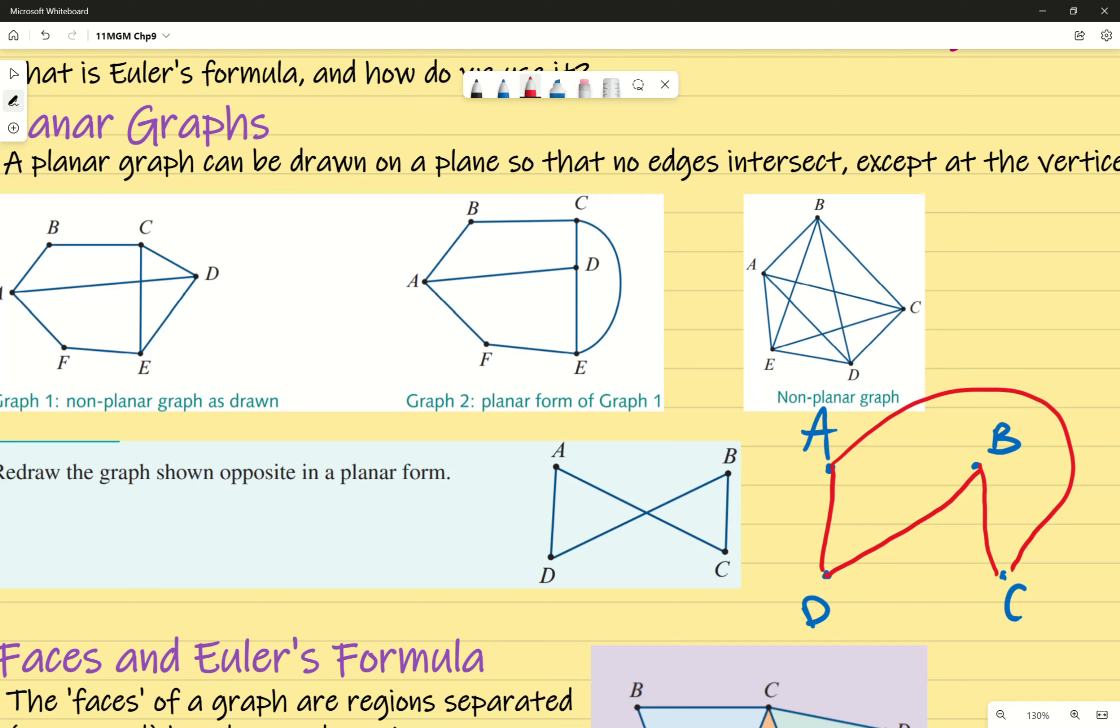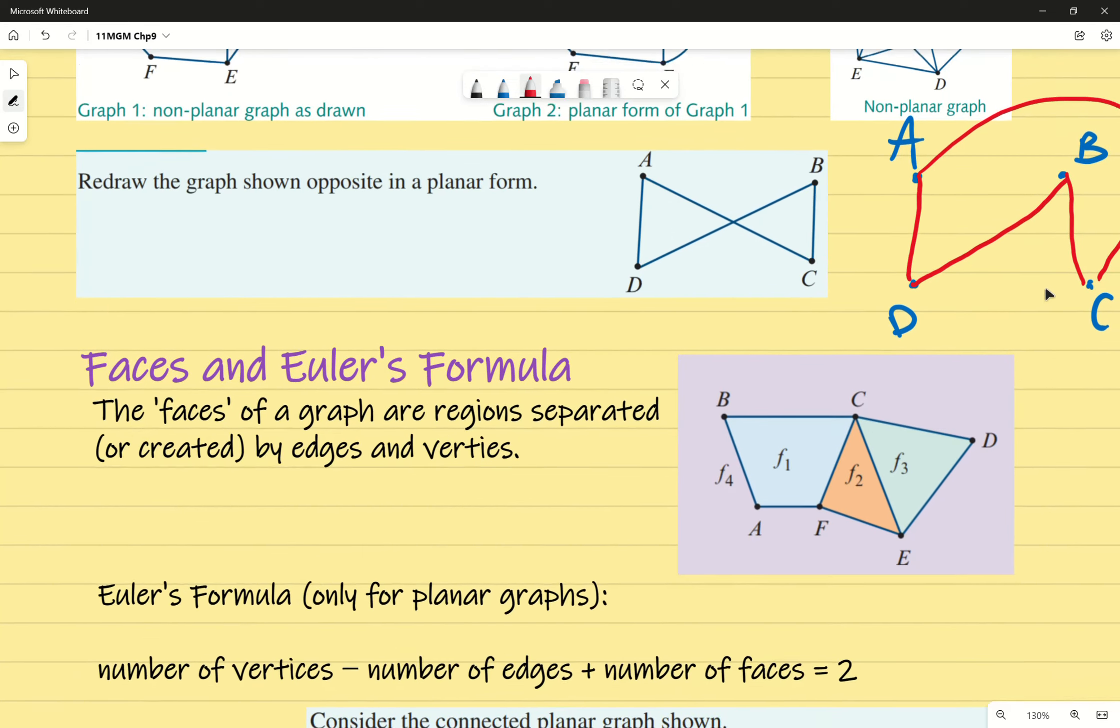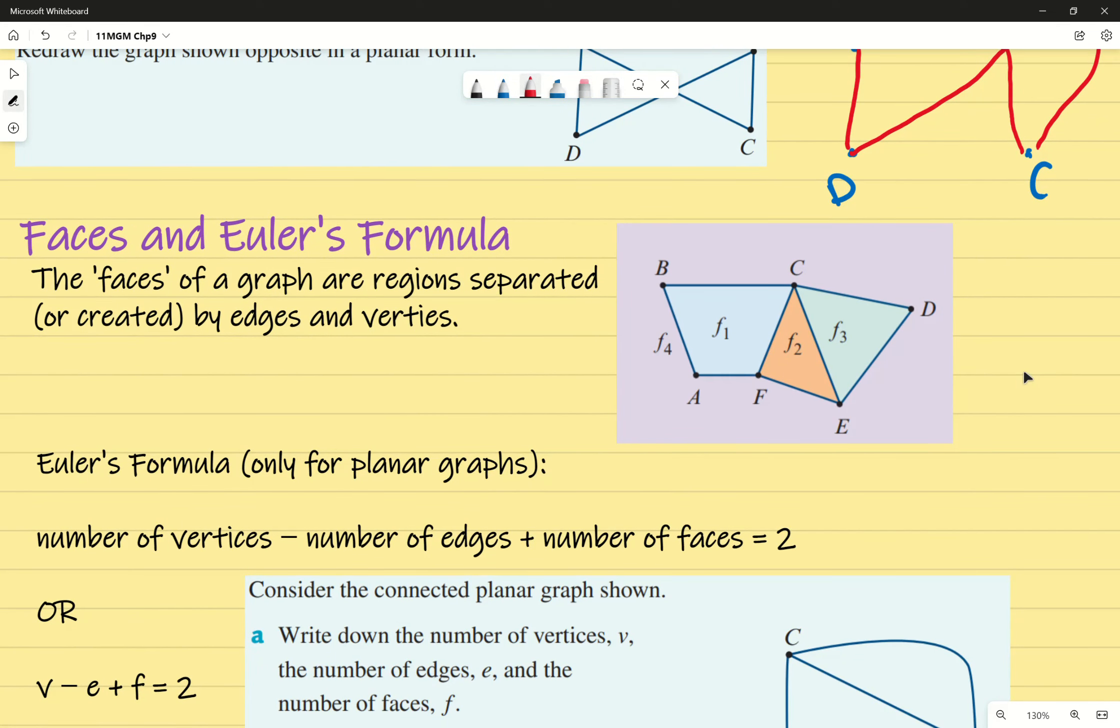Euler proposed this idea of faces. The faces of a graph are regions separated or created when you have those lines interlocking. In mathematical terms, faces are regions separated or created by edges and vertices.